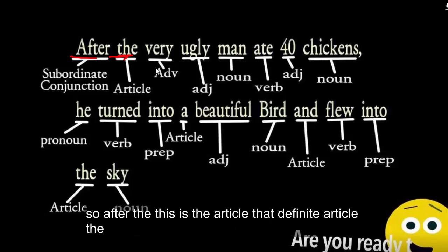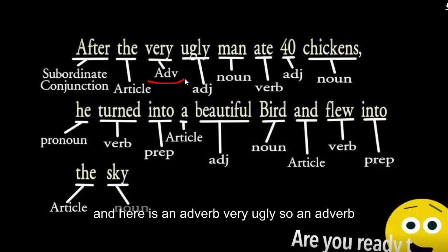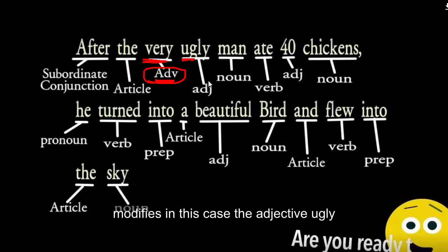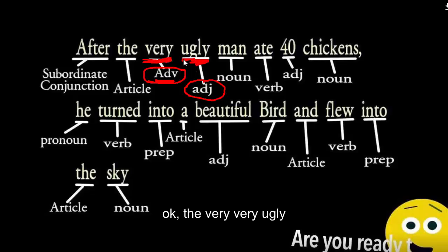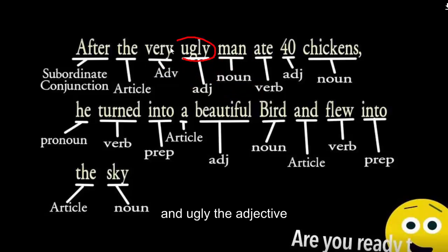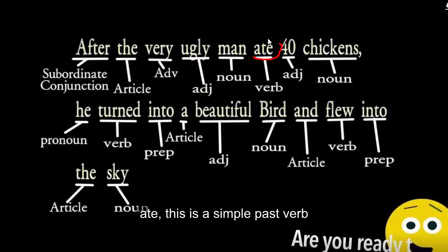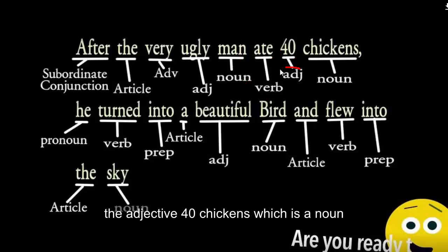Going back to our sentence: 'after' is the subordinate conjunction. 'The' is the definite article. 'Very' is an adverb — in this case it modifies the adjective 'ugly.' 'Ugly' is the adjective that modifies the noun 'man.' 'Ate' is the simple past verb. '40' is the adjective, and 'chickens' is the noun.